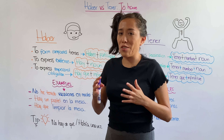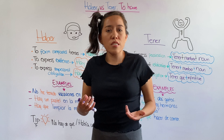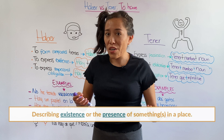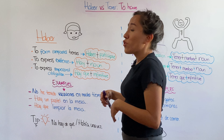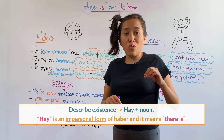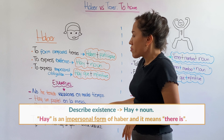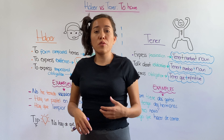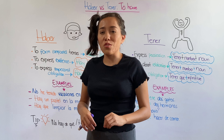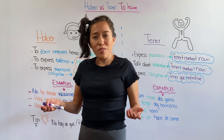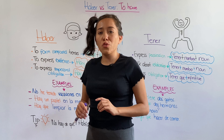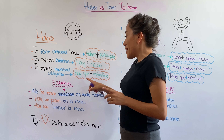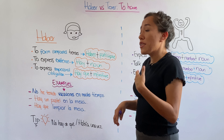Existence simply means that you're going to describe or list the things that there are in a place. To express existence, you're going to use the impersonal form 'hay' plus a noun. Haber also helps you express impersonal obligation. To form this meaning, you're going to use 'hay que' plus an infinitive.